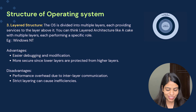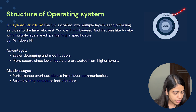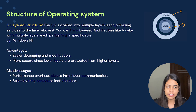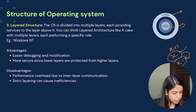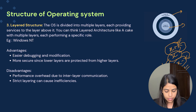The third one is layered structure. The operating system is divided into multiple layers, each providing services to the layer above. You can think of layered architecture like a cake with multiple layers, each performing a specific role. Layer 0 is the hardware and layer N is the user interface. Any layer X takes services from layer X-1 and provides services to layer X+1. Changes to layer X only need to be reflected in the adjacent layers. The example is Windows NT.